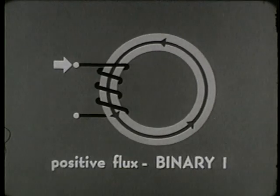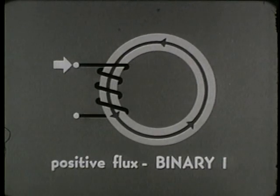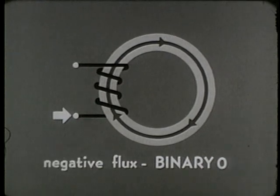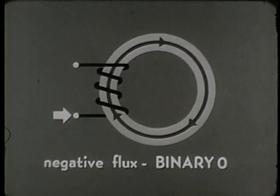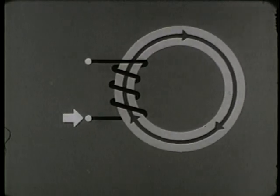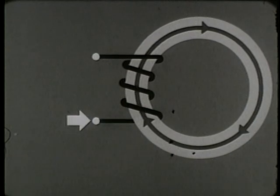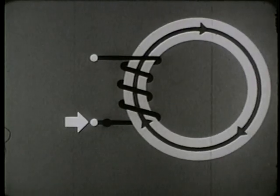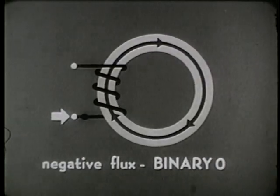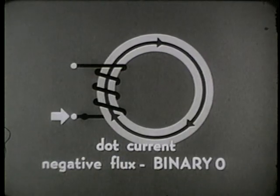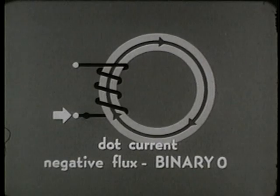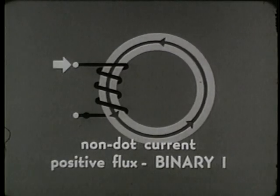The conductor is wound so that current flowing in this direction produces a positive flux, setting the core in the binary one state. Current flowing in the opposite direction produces a negative flux, which sets the core in the binary zero state. To show the polarity of the winding in a core diagram, we mark one side with a black dot. By definition, current that flows into the winding from the dot side sets the core to zero. Current flowing into the non-dot side sets the core to binary one. Remember: non-dot current for one, and dot current for zero.